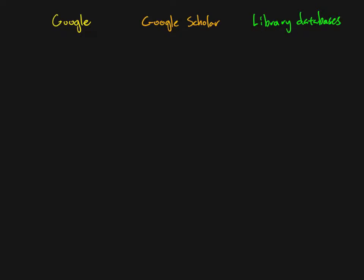What are the differences between these? If you are searching Google, you're essentially searching the entire internet. There are some exceptions — things that Google will filter out — but it's quite an intelligent search. It's essentially going to give you everything. It's going to give you some academic publications, some scientific journal articles, but it's also going to give you lots of non-scientific, unscientific things.